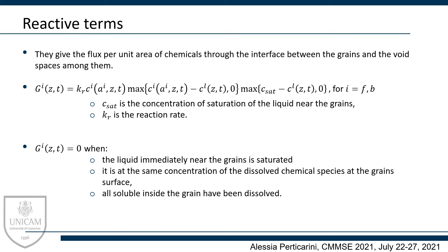Such exchange is described by the reaction term, which gives the flux per unit area of chemicals through the interface between the grains and the void spaces among them. The formulation used for the reaction term is reported in the slide. The flux is zero when the liquid immediately near the grains is saturated, or it is at the same concentration as the dissolved substances at the grain surface, or when all soluble species inside the grain have been dissolved.